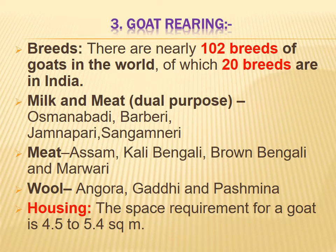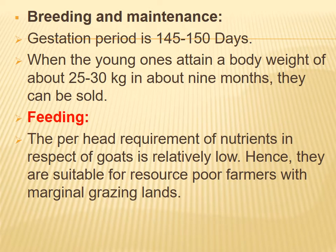Third, goat rearing. There are nearly 102 breeds of goats in the world, of which 20 breeds are in India. Goats can meet dual purposes: Osmanabadi, Barbari, Jamnapari, and Sangamneri for meat; Assam Kali, Bengali Brown, Bengali, and Marwari for meat purpose; Angora, Gadi, and Pashmina for wool purpose. Housing space required for goats is 4.5 to 5.4 square meters.